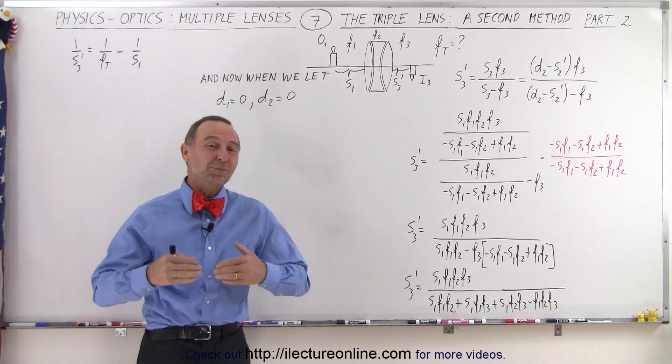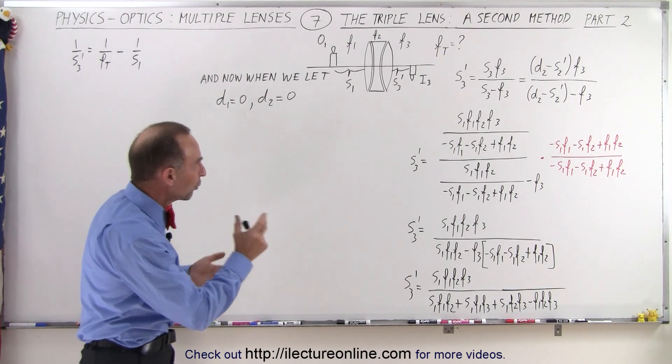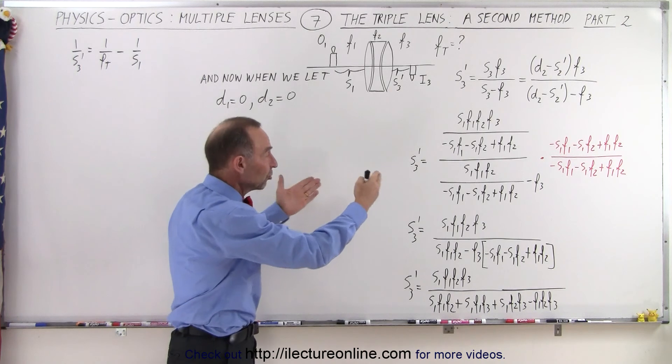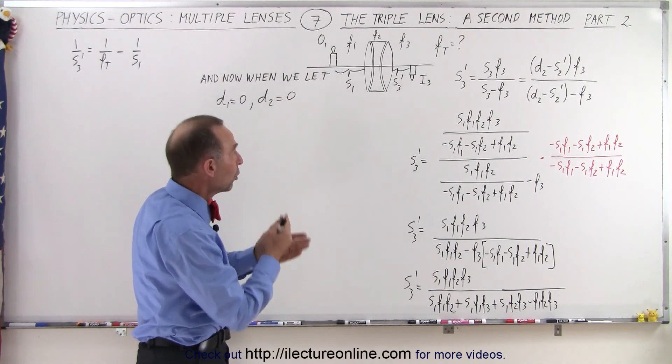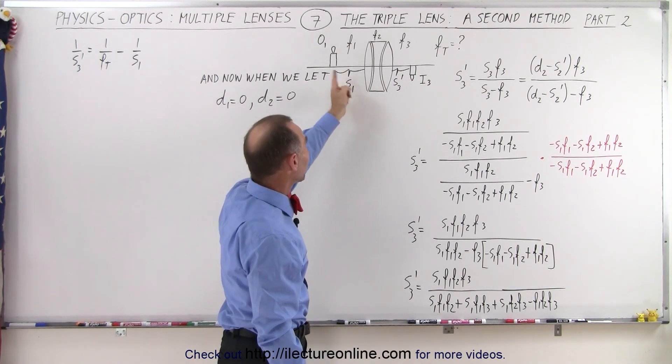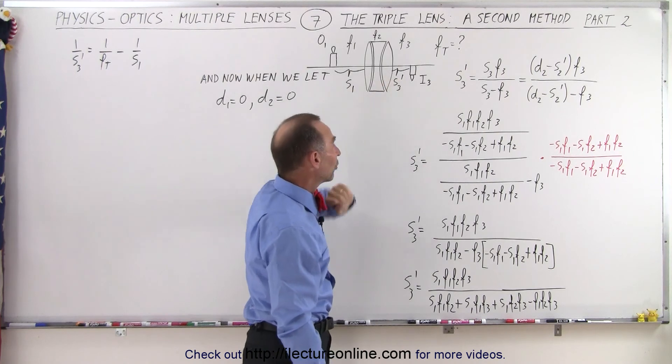Welcome to our lecture online. Here's part two in the attempt to find the equivalent equation for the focal length of a triple lens system using the traditional method, where we simply start with the first object and the final image, and based upon the distance from the first object to the first lens and the distance from the final image to the third lens.